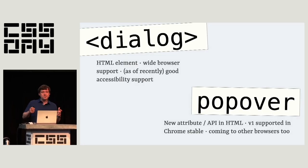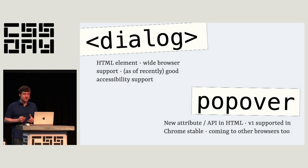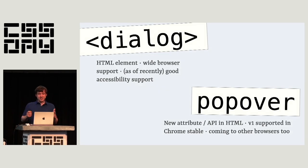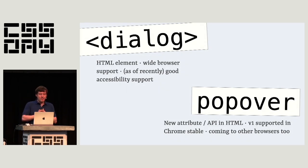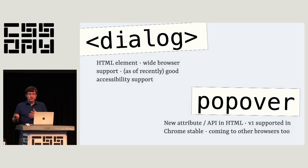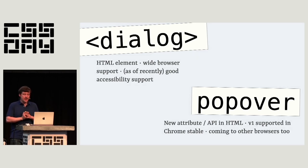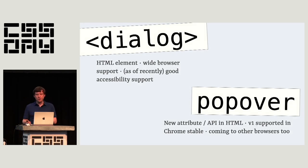I'm going to focus on two different parts of the HTML specification. One is the dialog element, the other is the popover attribute. The dialog element has been around for a while and recently got very good browser support across all the browsers — it was part of Interop 2022. As of recently, it also has good accessibility support. Popover is an attribute that is fairly new, born at Open UI, a community group at the W3C. It shipped in Chrome two weeks ago and is coming to Safari in the fall.